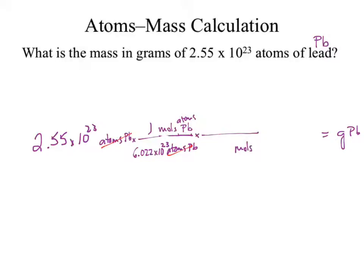Moles of lead must disappear. I want grams of lead. Is there a conversion factor between grams and moles of lead? Yes — found on the periodic table. Lead is 207.2 grams per one mole. The moles of lead cancel and I'm left with grams of lead.